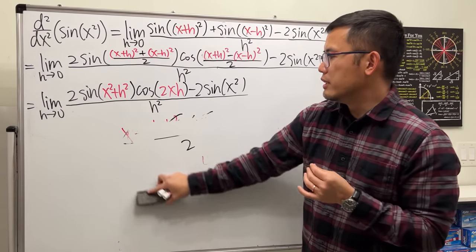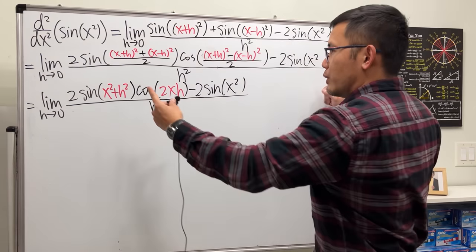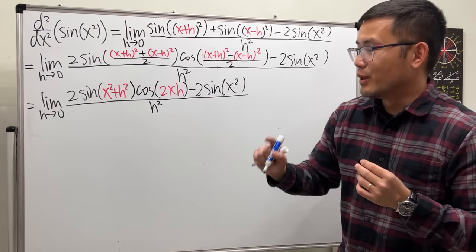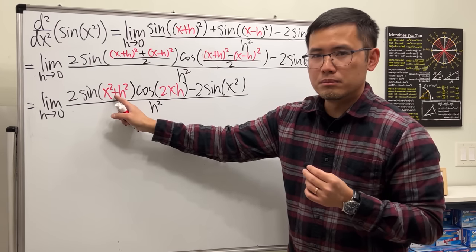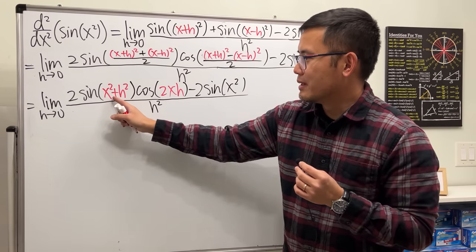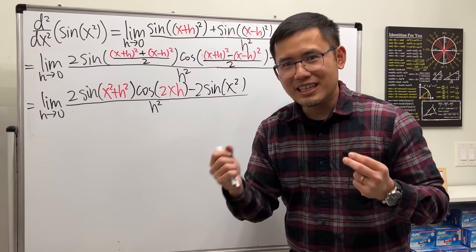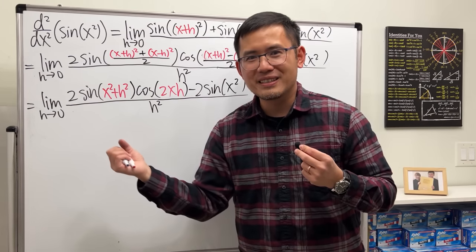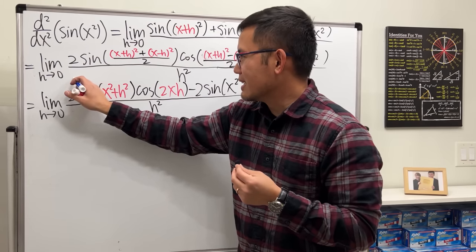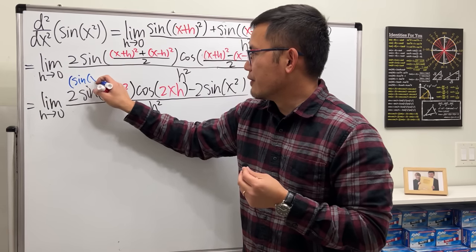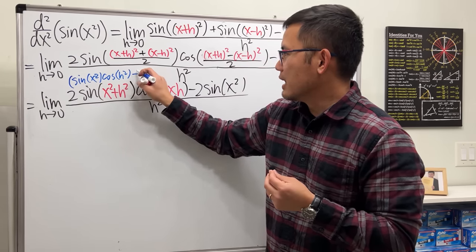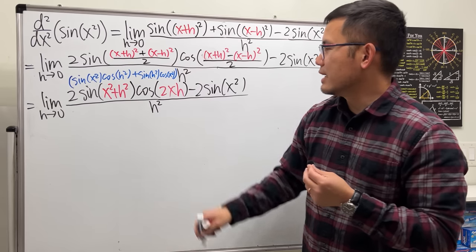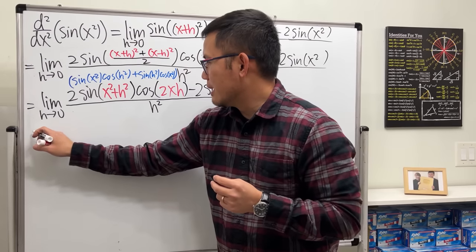So we now have the limit as h approaches zero of 2 sine(x² plus h²) times cosine(2xh) minus 2 sine(x²), all divided by h squared. The expression is getting shorter, but we still have an angle sum — sine of (x² plus h²) — which we'll need to expand using the angle sum identity for sine.